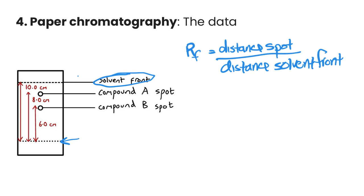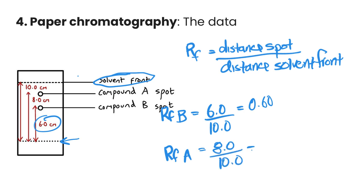For example, if we were doing the calculation for the RF for spot B, we would do our six centimeters that it traveled, and we would divide that by 10 centimeters. That gives us an RF of 0.6. Then we could do the same for A, and that one is 8 centimeters over 10 centimeters, or 0.80. A traveled further, it has a higher RF value.